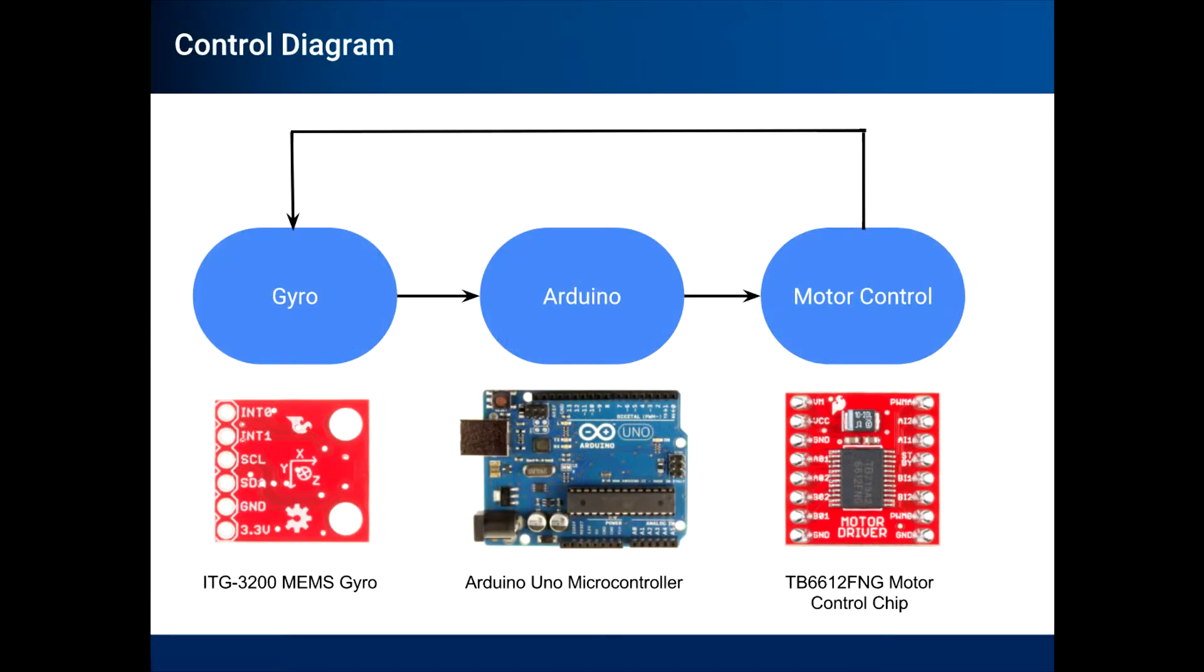The block diagram shown here illustrates implementation of the control law developed. The ITG-3200 series gyrochip, which is a component of the IMU board, feeds in angular velocity data to the Arduino Uno microcontroller.